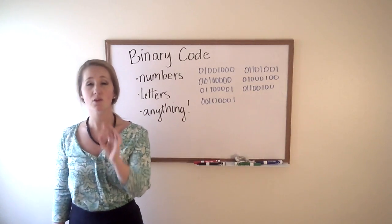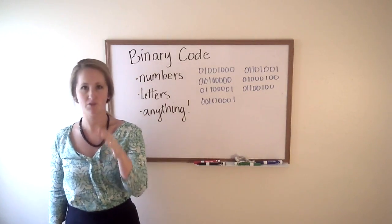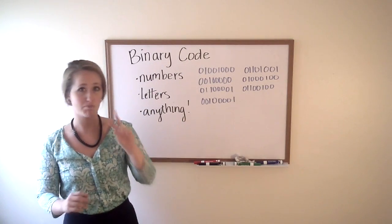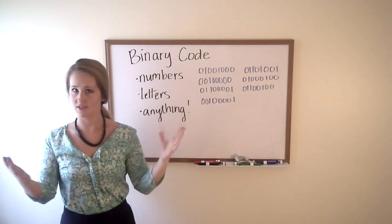Now binary code is a really basic, simple computer language where there's just ones and there's zeros. Two things: ones and zeros.